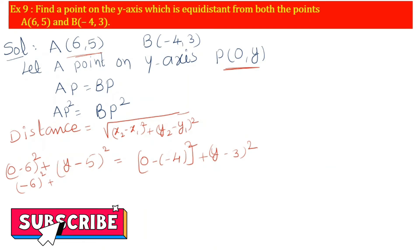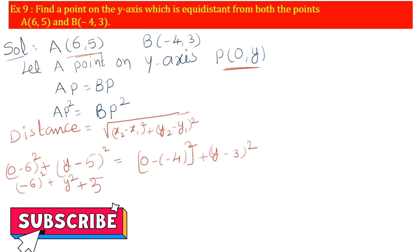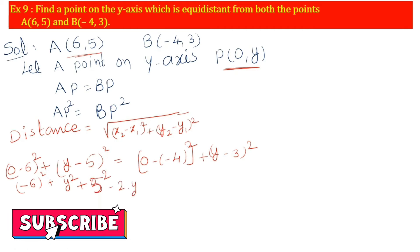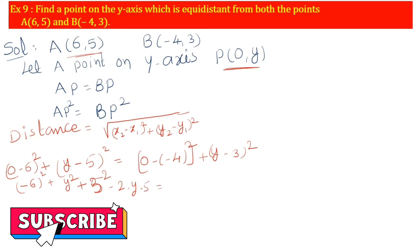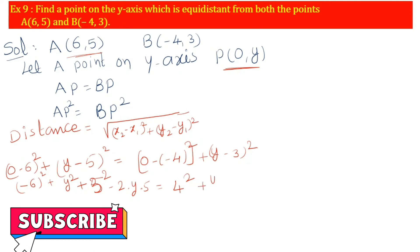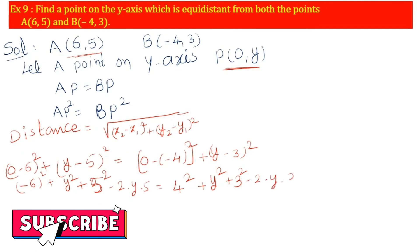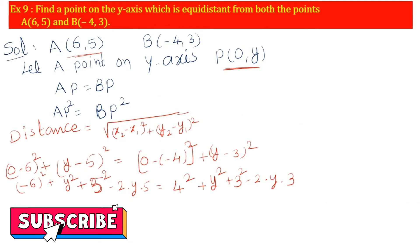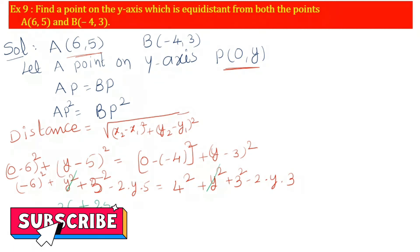Apply the (a - b)² formula. Left side: 36 + y² + 25 - 10y. Right side: 16 + y² + 9 - 6y. Both sides have y², so y² cancels.